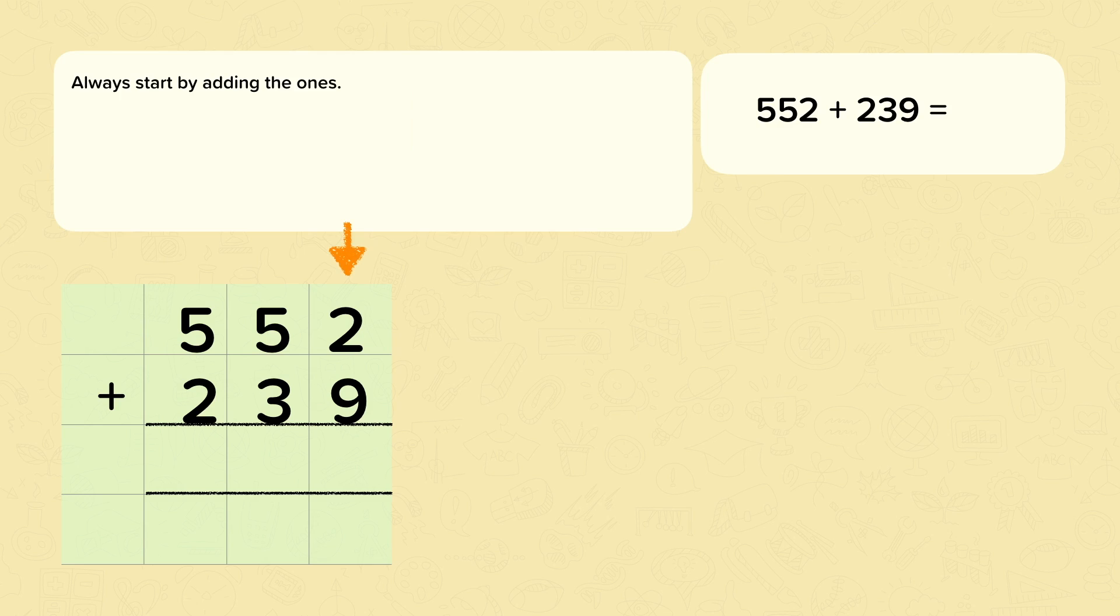Now we still always start with the ones. So we've got here two add nine. Two add nine is eleven. But we can't put eleven ones in the ones column.